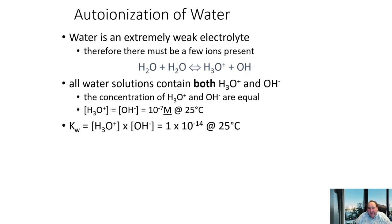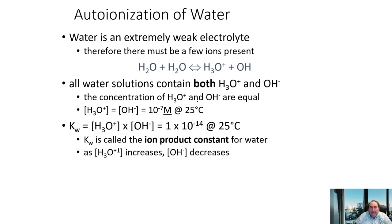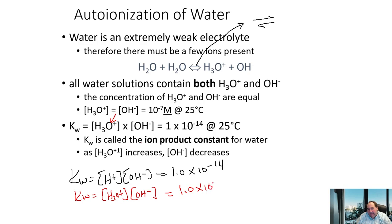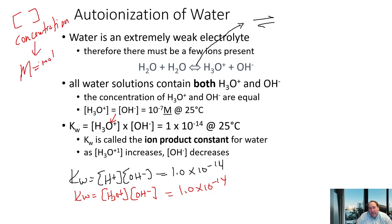Water establishes an equilibrium through autoionization. The equilibrium constant Kw = [H+][OH-] = 1 × 10⁻¹⁴ (you can also write [H3O+][OH-] = 1 × 10⁻¹⁴). Brackets indicate concentration — typically molarity (moles per liter). This value holds at standard temperature.